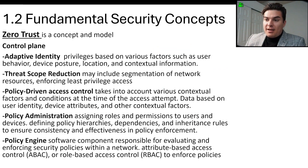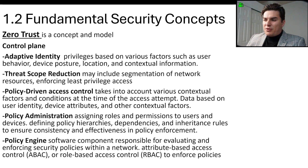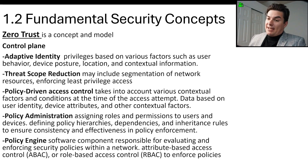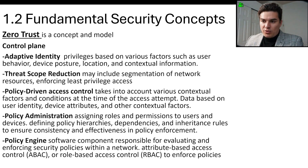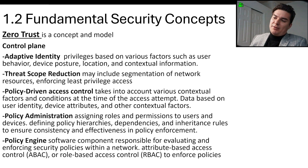These all fall under zero-trust architecture. In the control plane, there is adaptive identity — privileges are based on factors such as user behavior, device posture, location, and contextual information. For example, if you log in every day at 7 a.m. and then log in at midnight, it will flag that. Threat scope reduction includes network segmentation and enforcing least privilege access — you should only have the minimum access you need. For instance, an IT department employee shouldn't be able to access HR files.